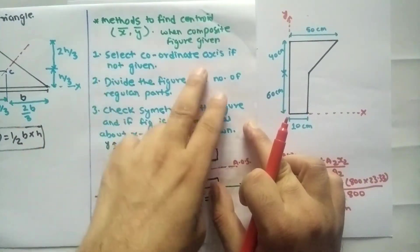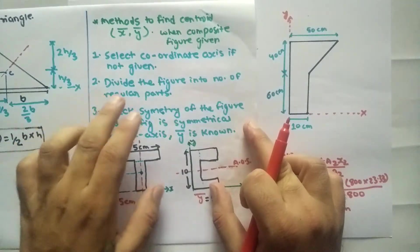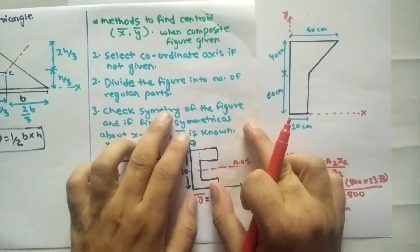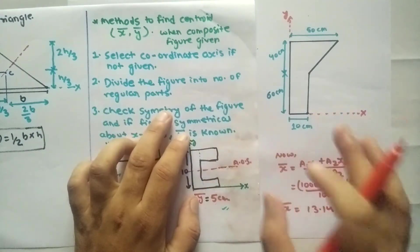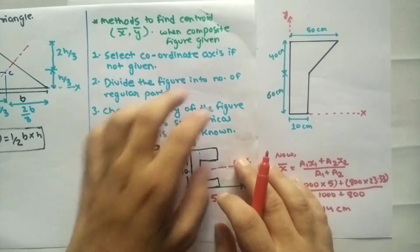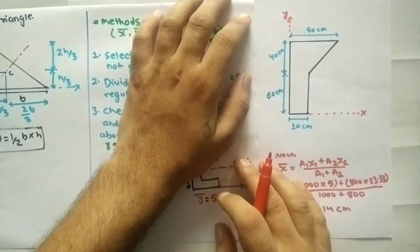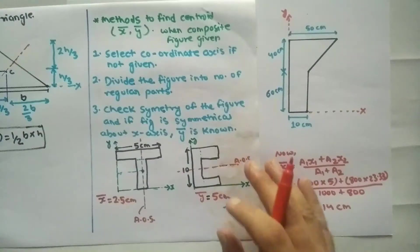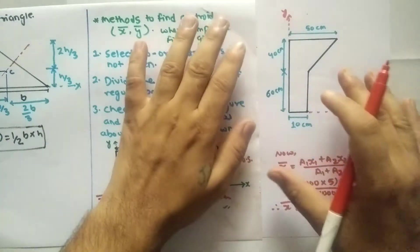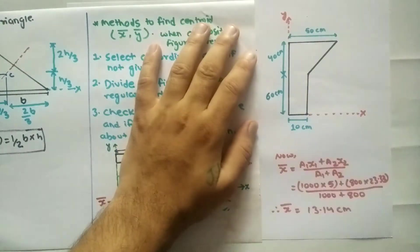Select coordinate axis if not given. Then divide the figure into a number of regular parts. Each part can be a regular shape — square, triangle, rectangle, circle, or semicircle. Divide the composite figure into these regular parts.